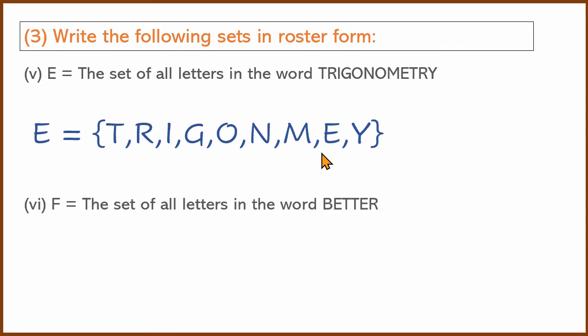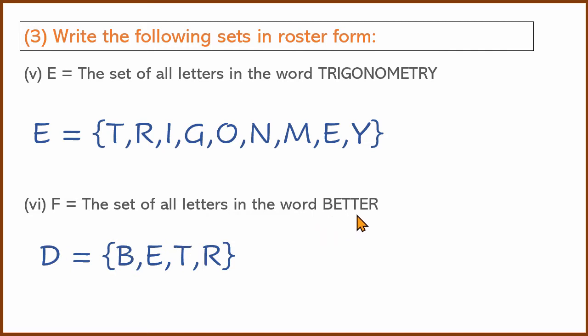Set of all letters in the word BETTER. B, E, T, T, E, R — T appears twice and E appears twice. Since a set does not repeat elements, the roster form is {B, E, T, R}.